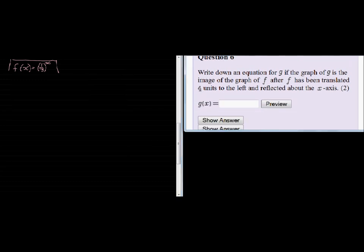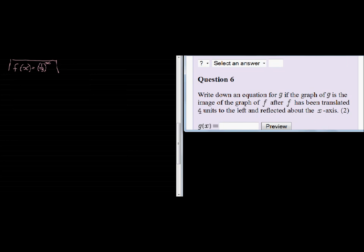Question 6: Write down the equation of G if the graph of G is the image of F. So we have F right here, and F has been translated 4 units to the left and reflected about the x-axis. Let's first go and draw F. There we have a rough hand sketch of F.